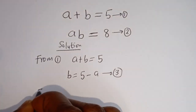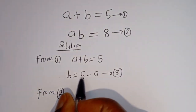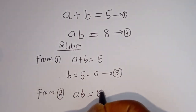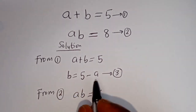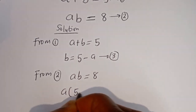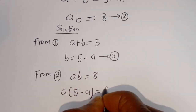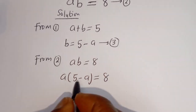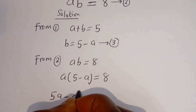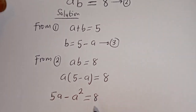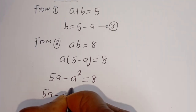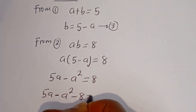Also from equation 2, let's substitute for B. Equation 2 is AB is equal to 8. When B is equal to 5 minus A, we have A bracket (5 minus A) is equal to 8. Let's open the bracket: A multiplied by 5 is 5A, minus A multiplied by A is A squared, so 5A minus A squared is equal to 8.